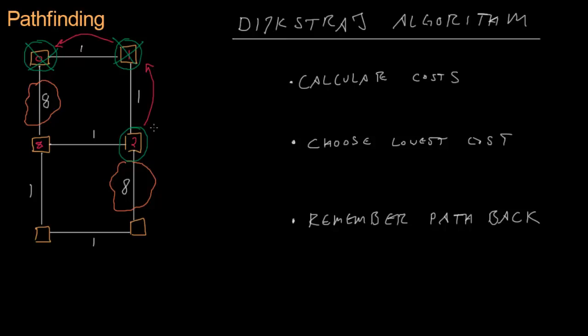Back to step 1: calculate neighbor costs. The previous node is out of the running. One neighbor costs 2 plus 8 equals 10. Another neighbor already has a value, but we found a faster route: 2 plus 1 is 3, which is cheaper than 8, so we update that node. We replace the old cost with the new lower cost of 3.